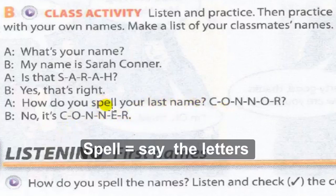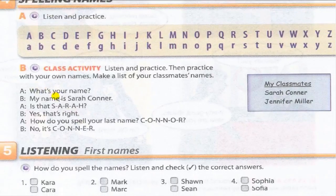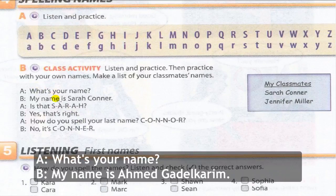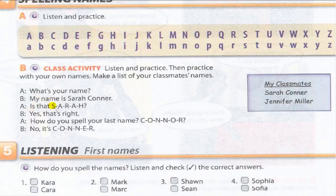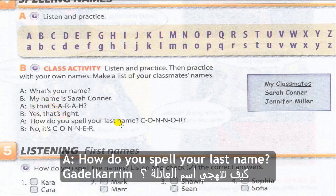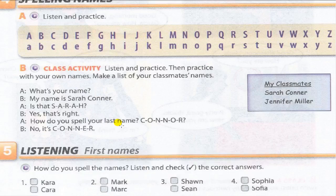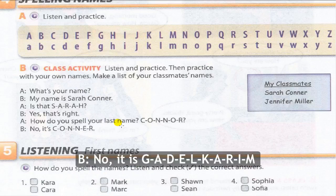Spell — say the letters. Conversation A and B. A: What's your name? My name is Ahmed Gadel Kareem. Is that A-H-M-E-D? Yes, that's right. How do you spell your last name? Gadel Kareem: G-A-D-E-L K-A-R-I-M — one R, not double R.